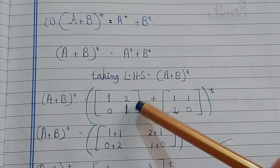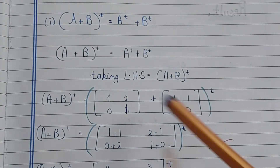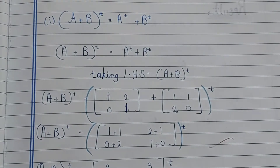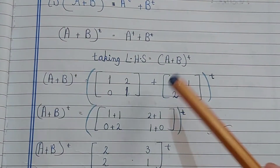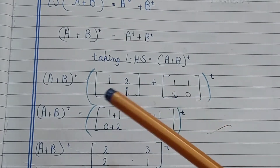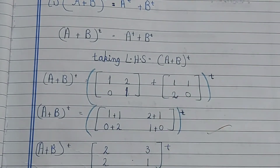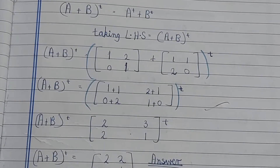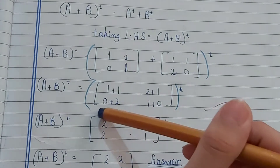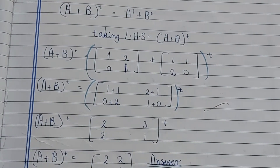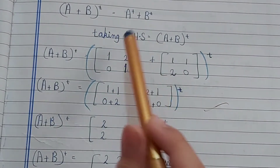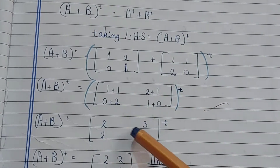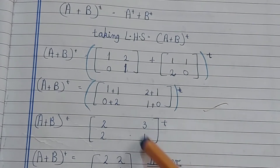A has values [1,2;0,1] and B has values [1,1;2,0], placed inside a circle bracket with small t for transpose. We solve element-wise: 1+1=2, 2+1=3, 0+2=2, 1+0=1. So A+B equals [2,3;2,1], and now we need to take its transpose.